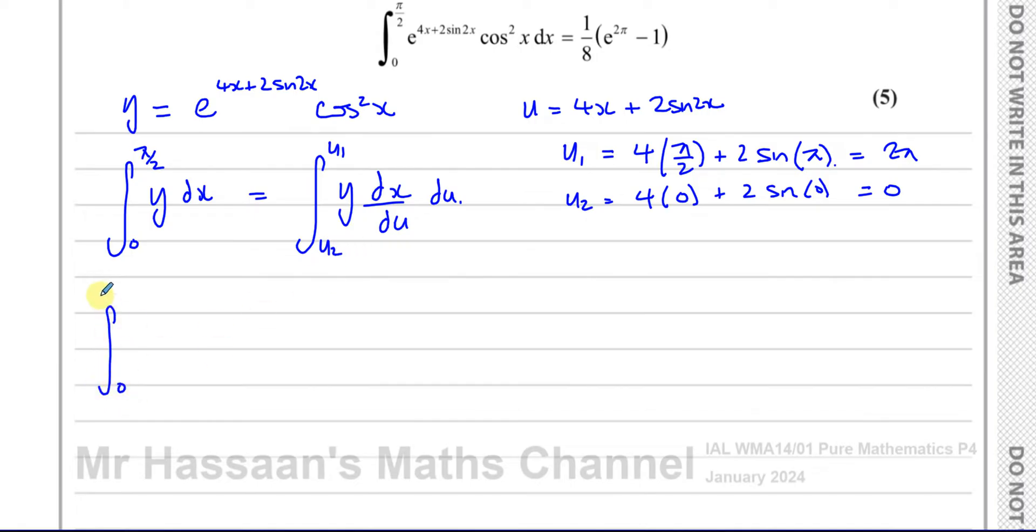Our y is exactly what we've got written, so you're going to have e to the power of u and then cosine squared x. For now I'm going to write it as cosine squared x and I'm going to modify it so that in the end we're going to have everything in terms of u here, no x.